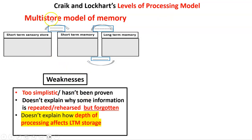Particularly, we said it was too simplistic and hadn't been proven by empirical studies. Secondly, it doesn't explain why some information is repeated or rehearsed but is still forgotten. The key thing for today is that one of the weaknesses of the multi-store model is it doesn't explain how depth of processing affects long-term memory storage — and this is where Craig and Lockhart picked up.